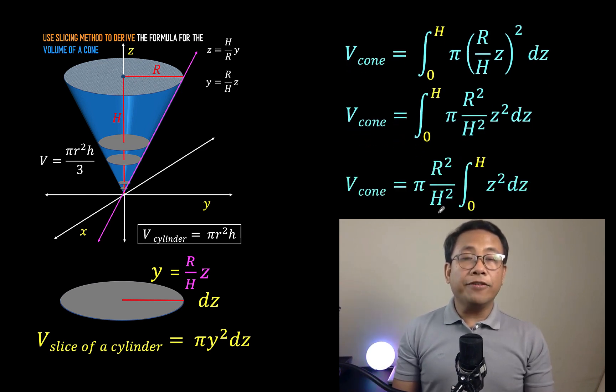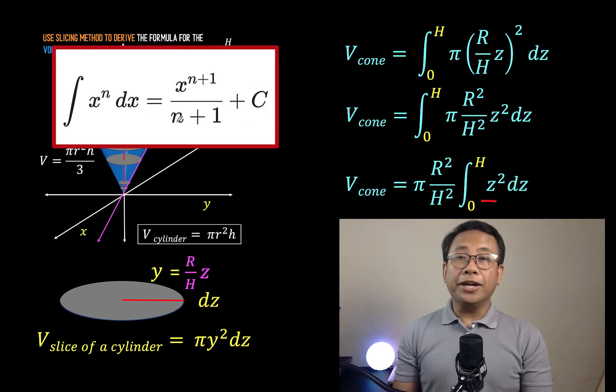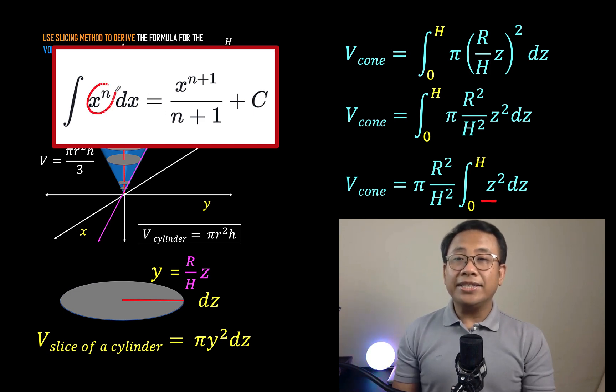And this is now what we have: the constant pi r squared over h squared times the integral from 0 to h of z squared dz. We need to find the antiderivative of z squared dz, and we can use this power rule of antidifferentiation. The antiderivative of x raised to n dx is equal to x raised to this exponent plus 1 over the same exponent n plus 1 plus a constant.